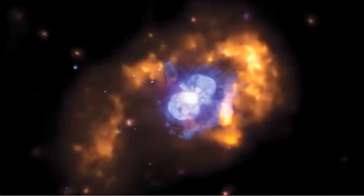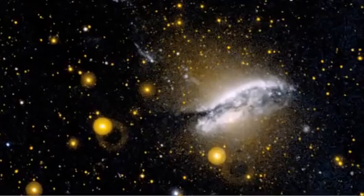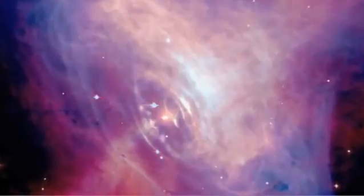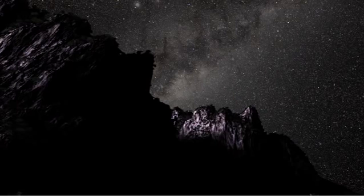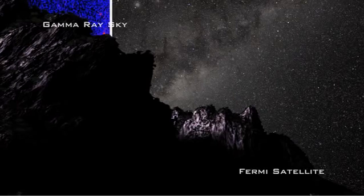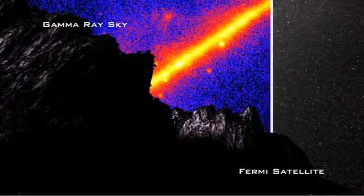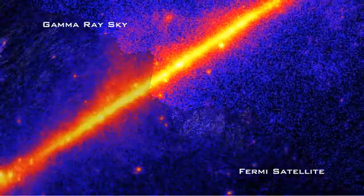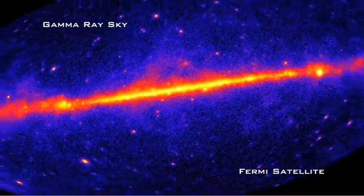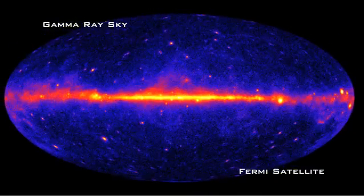Gamma rays stream from stars, supernovas, black holes and pulsars to wash our sky with gamma ray light. NASA's Fermi gamma ray space telescope imaged the location of these sources, mapping out the Milky Way galaxy by creating a full 360-degree view of the galaxy from our perspective here on Earth.